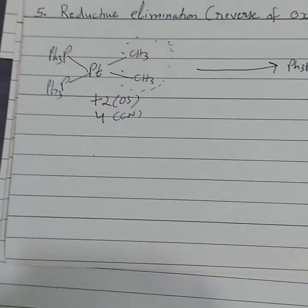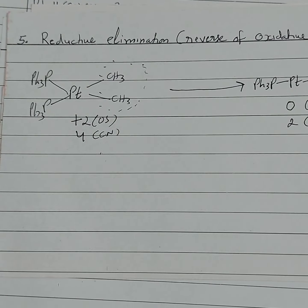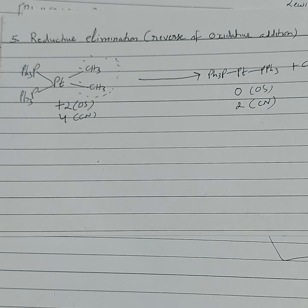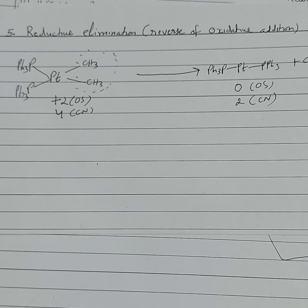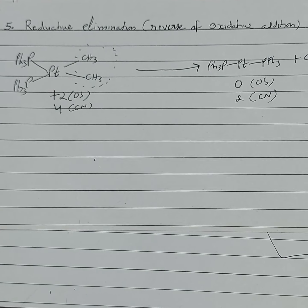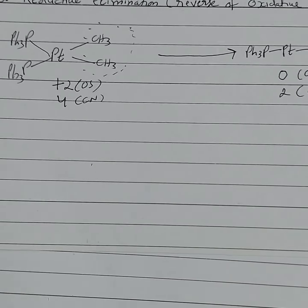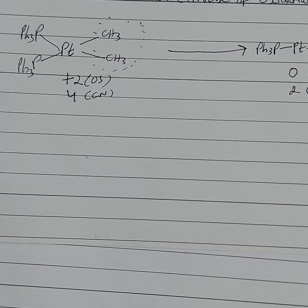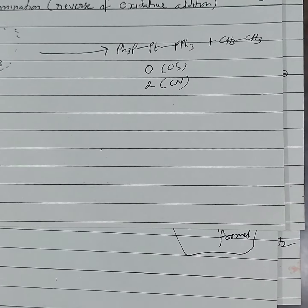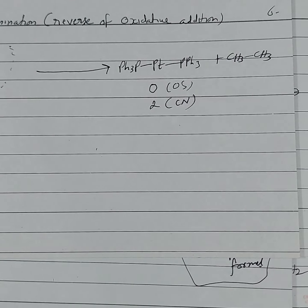The last and most common step in catalytic chemistry is reductive elimination, which is the reverse of oxidative addition. In this case, the oxidation number decreases by 2 and the coordination number decreases by 2. For example, platinum with coordination number 4 undergoes reductive elimination and produces a saturated system as a byproduct.